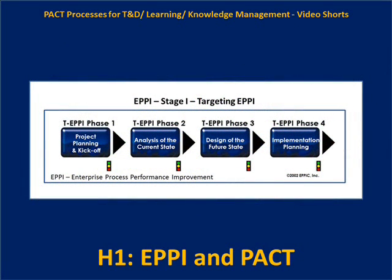EPI Stage 1 is for targeting Enterprise Process Performance Improvement opportunities and addressing problems. The first phase, similar to CAD, is Project Planning and Kickoff. Then there's an analysis of the current state in Phase 2. In Phase 3, you design the future state and understand the gaps between the current and the future. And then in Phase 4, you do Implementation Planning.